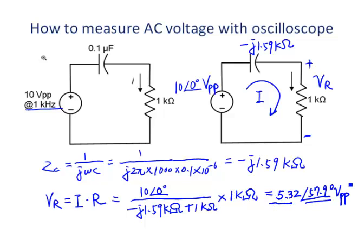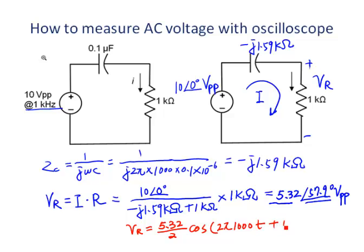We can convert the phasor into the time domain as a sinusoidal voltage. The peak value is the peak-to-peak divided by 2, so 5.32 divided by 2 gives 2.66 cosine(2π × 1000t + 57.9°). To measure the AC voltage, we need to know the voltage amplitude and also the phase angle. The frequency is the same as the power supply, which we already know is 1 kHz. So let's try to measure the magnitude and phase angle separately.